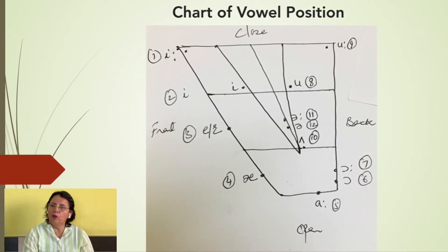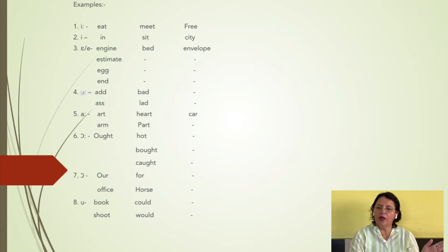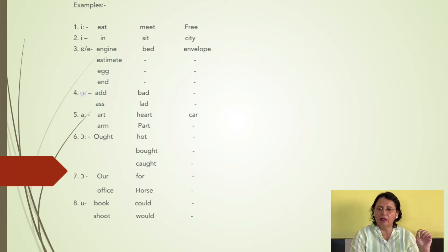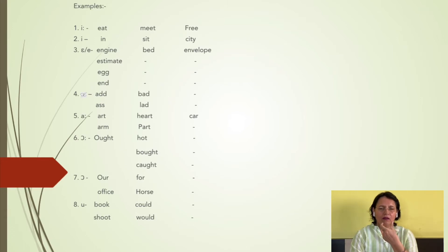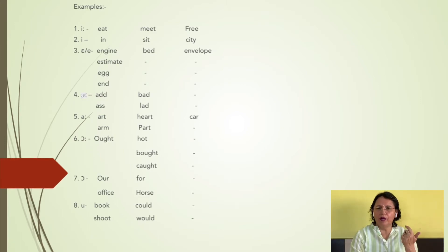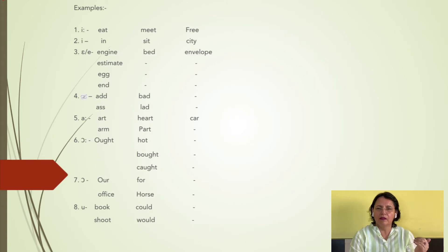Let us see the entire classification beginning with vowel number 1. The sound is /iː/, as you have it in words like 'eat', 'meet', and 'free' — at the initial, medial, and final positions respectively. When you pronounce /iː/, you will find that your lips are spread and your jaws are very close to each other with very little opening. Hence, /iː/ is a nearly closed vowel, front, and at the same time an unrounded but spread vowel.